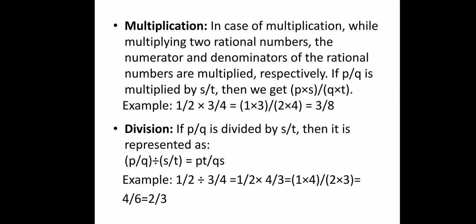For addition and subtraction, we make denominators the same and then add or subtract the numerators. Now for multiplication: when multiplying two rational numbers, the numerators are multiplied together and the denominators are multiplied together. If P/Q is multiplied by S/T, the result is (P×S)/(Q×T). For example, 1/2 multiplied by 3/4 gives (1×3)/(2×4) = 3/8.